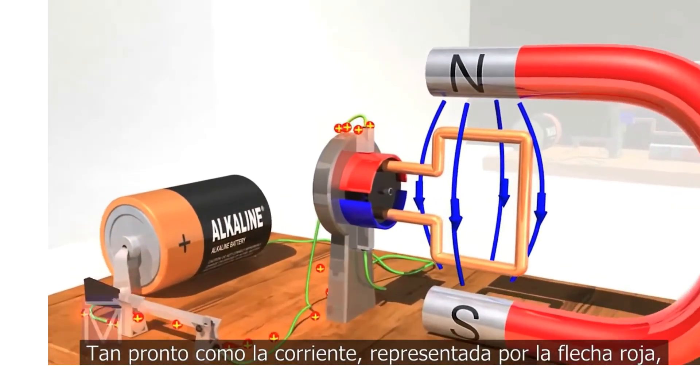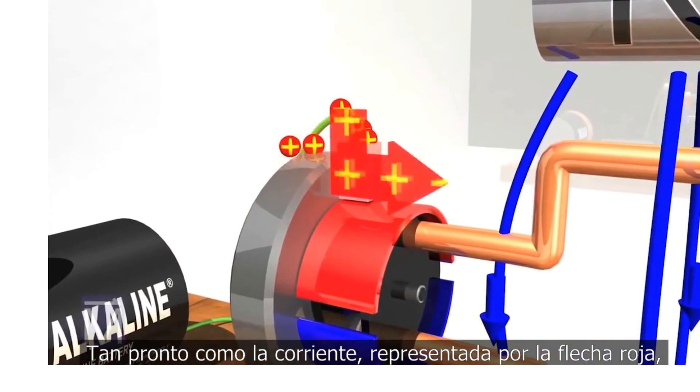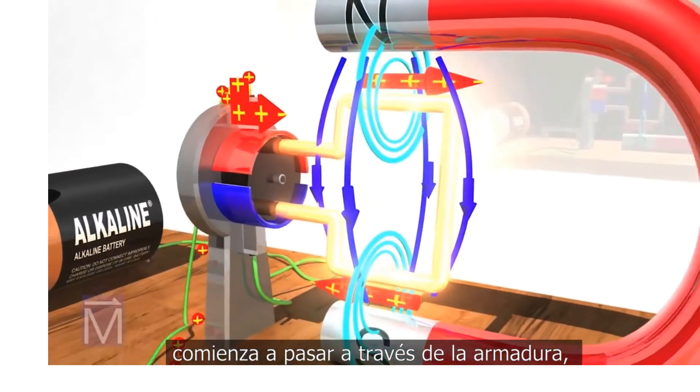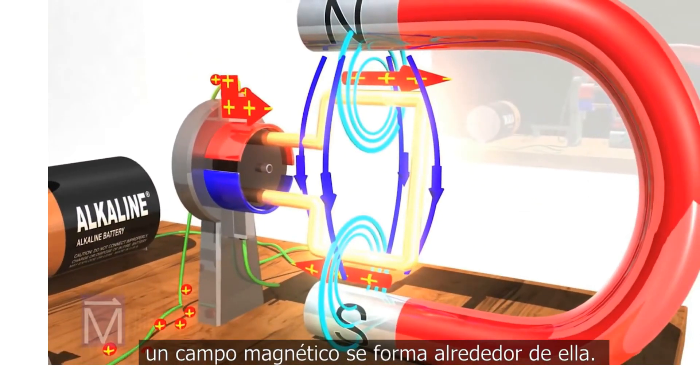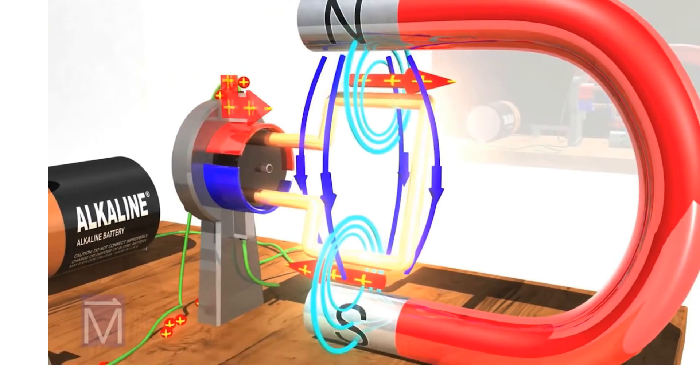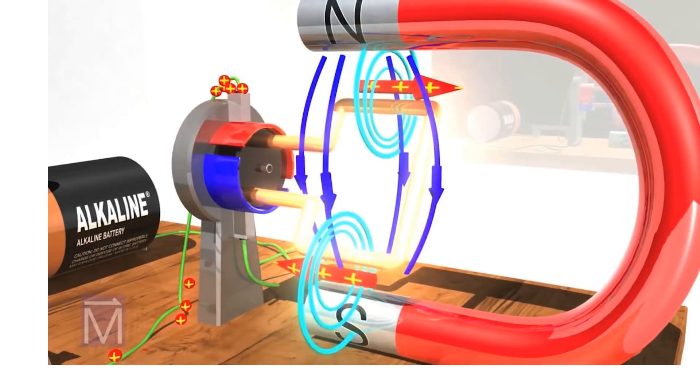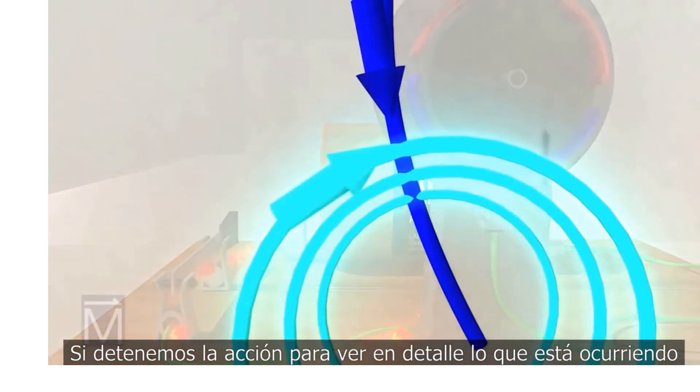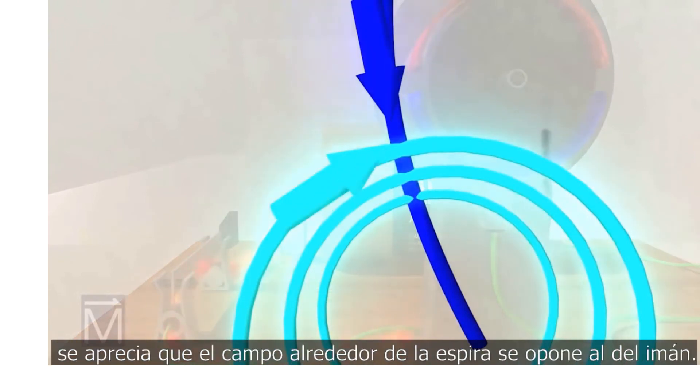As soon as that current, represented by the red arrows, starts running through the armature, a magnetic field forms around it. Stopping the action for a moment to take a closer look, we see that the field around the coil opposes the field of the horseshoe magnet.